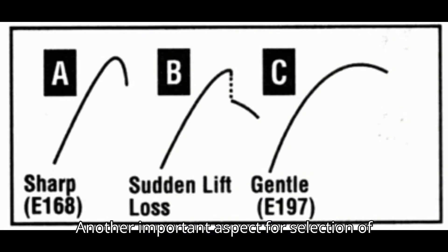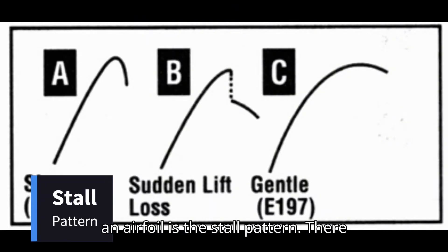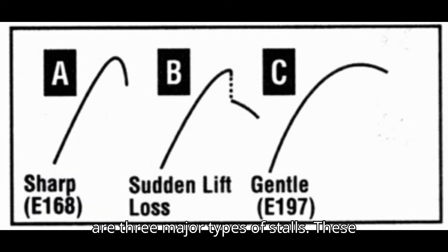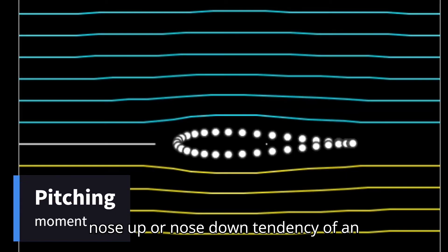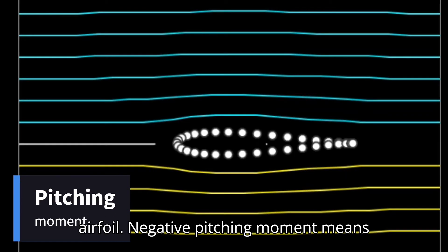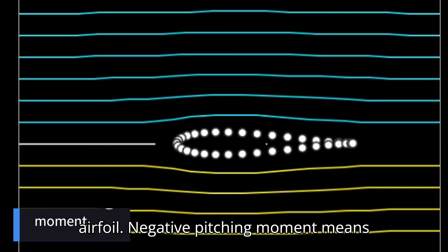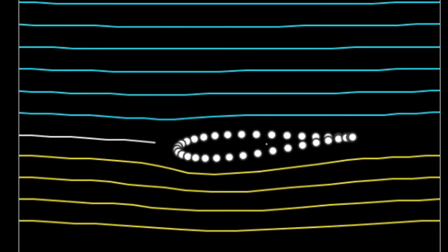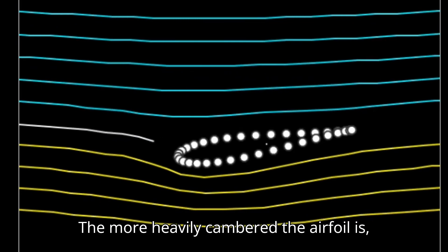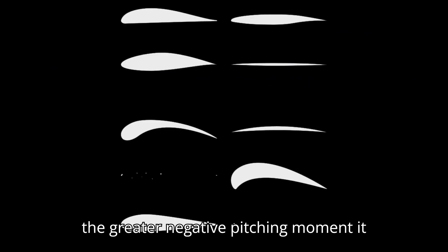Another important aspect for selection of an airfoil is the stall pattern. There are three major types of stalls: sharp, sudden lift loss, and gentle. Pitching moment is the nose-up or nose-down tendency of an airfoil. Negative pitching moment means the airfoil tends to lower its nose. The more heavily cambered an airfoil is, the greater negative pitching moment it has.